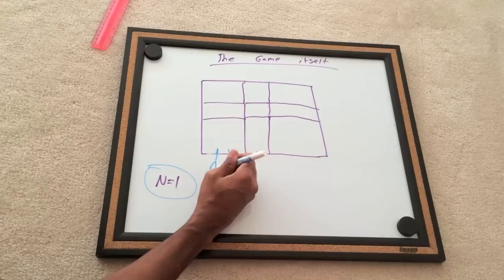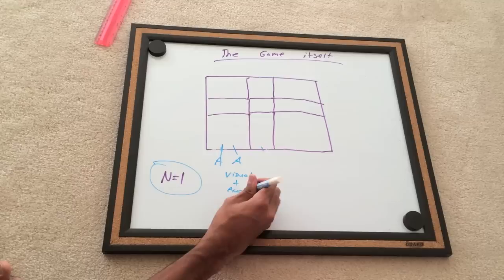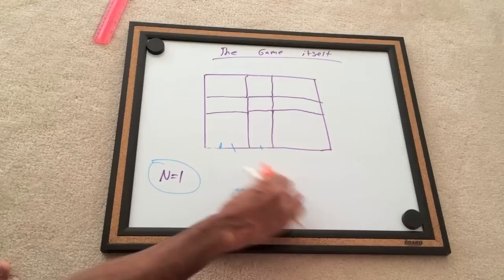One more situation. Let's say the first move gives us an A in the lower left corner, and so does the second move. Now both the visual and audio signal have been met.